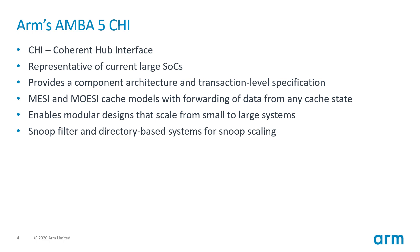The first step in this process is to define a flexible interface and a set of transactions that can support multiple configurations. For this, we looked at ARM's AMBA5 CHI specification. CHI stands for Coherent Hub Interface and is the current standard used in ARM-based SoCs for on-chip communication and cache coherency. This standard provides a component architecture and transaction level specification that can model both MESI and MOESI cache coherency.